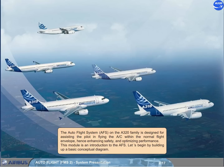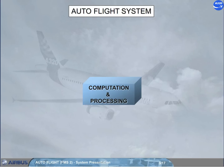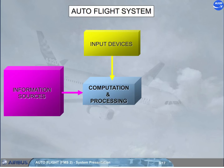Let's begin by building up a basic conceptual diagram. The AFS could be represented as four main sections. At the heart of the system is a computation and processing section — the brain. The central processing section has access to several information sources. The pilots have access to the central processing section via input devices. Finally, after computation and processing, commands are provided to output devices.